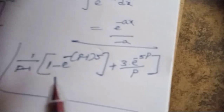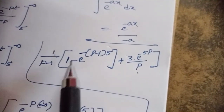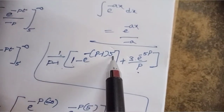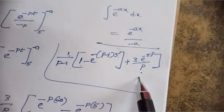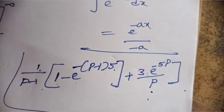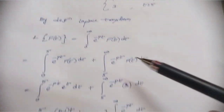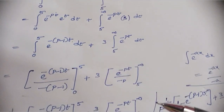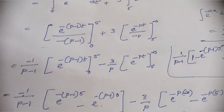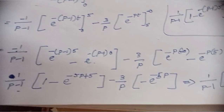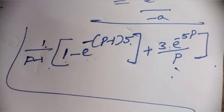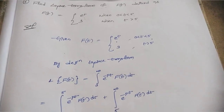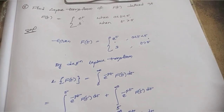This is the final solution: (1/(p-1)) · (1 - e^(-(p-1)·5)) + 3·e^(-5p)/p. Thank you for watching.